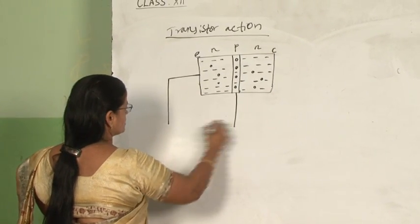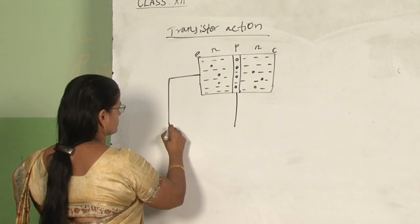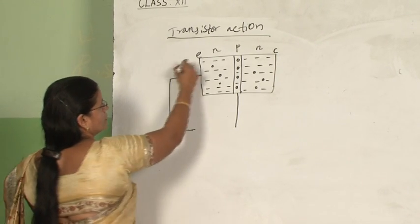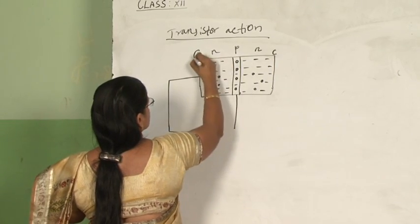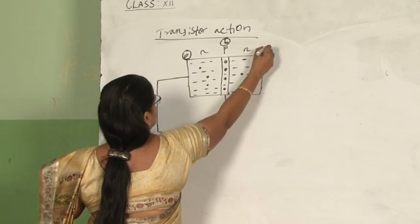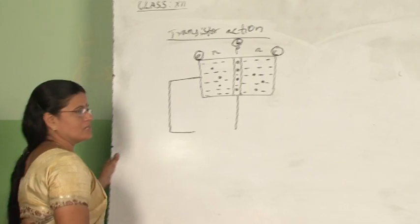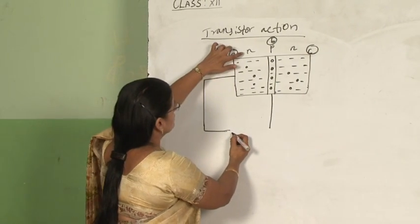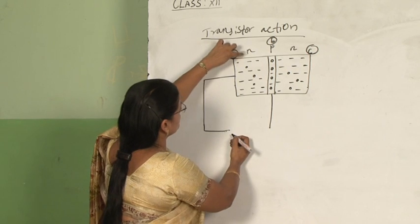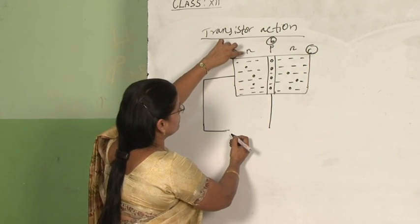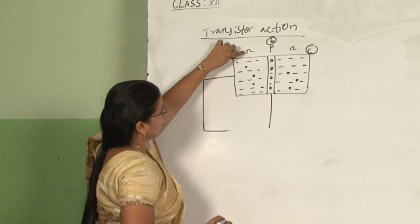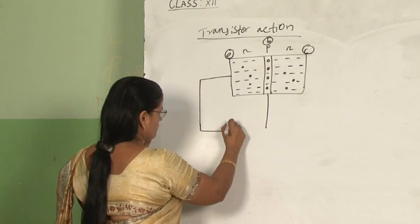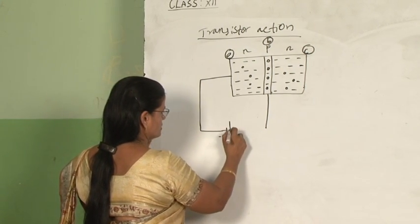Whenever a transistor is connected in the circuit, we have to keep in mind that the emitter-base junction should be forward biased. So before connecting, you have to see which type of semiconductor portion is there. Here it is the n-section, so forward bias means we have to connect the negative terminal of the cell here.